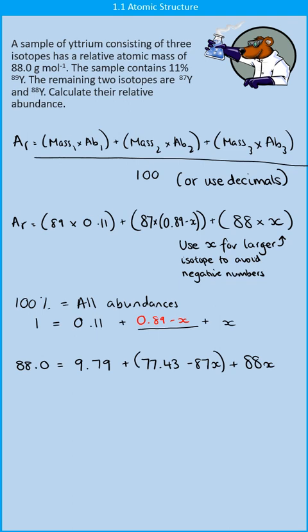And now I just need to simplify things. So all of that lot simplified on the right hand side comes out at 87.22 plus X. That X has come from the minus 87X and the plus 88X. So you can see now how it's useful to have the heavier isotope being the one that is X, because if we'd done it the other way around, we'd still have a very similar expression, but it would have a minus X value in it. And then we're just going to take away that 87.22 from both sides and be left with 0.78 is X.